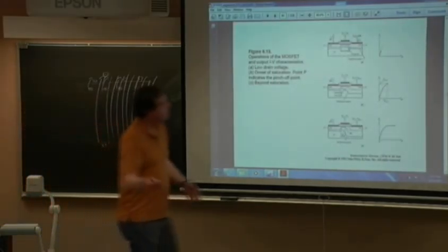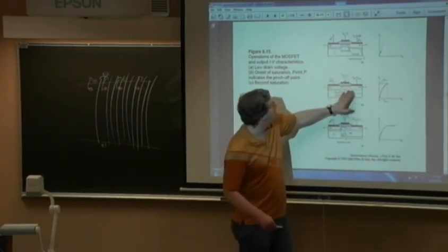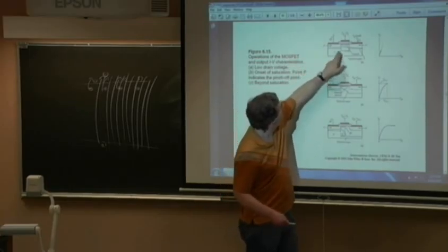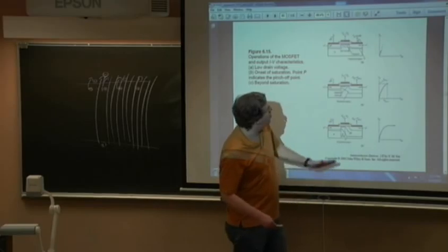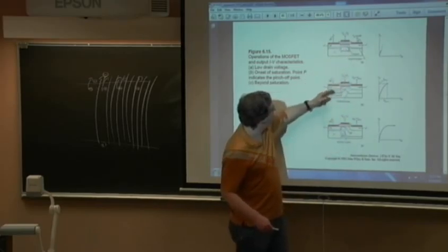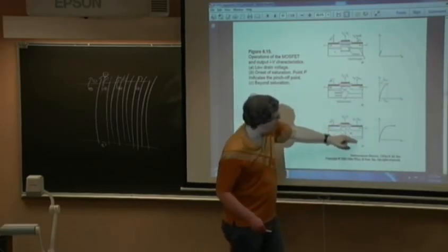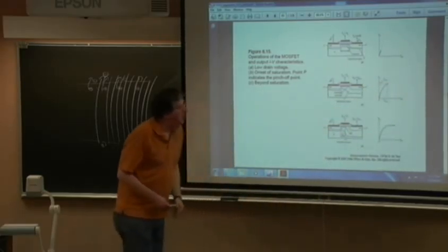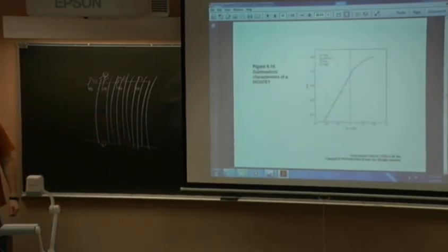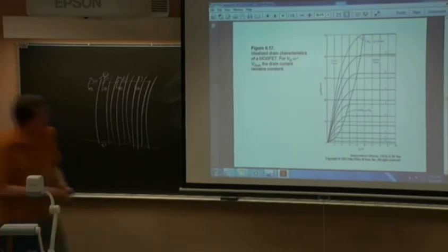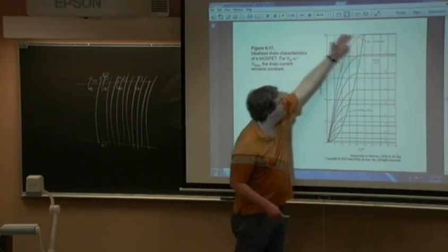The pinch-off of a MOSFET: at low V_DS the sharp slope indicates very low resistance; as V_DS increases, the depletion region starts forming, the curve bends over, and you get pinch-off. Here's the locus of pinch-off points forming the boundary of the saturation region across ten family-of-curves traces.